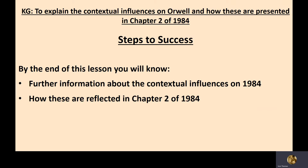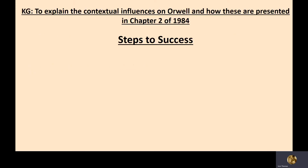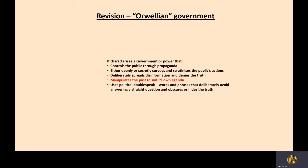Today you're going to learn about the Hitler Youth and other contextual factors that Orwell used to inspire 1984. First, let's revise what you studied last lesson. An Orwellian government is one that embodies state control — controlling the public through propaganda, hiding the truth with a positive story, and openly or secretly surveying and scrutinizing the public's actions, as well as spreading disinformation and manipulating the past to suit its own agenda.